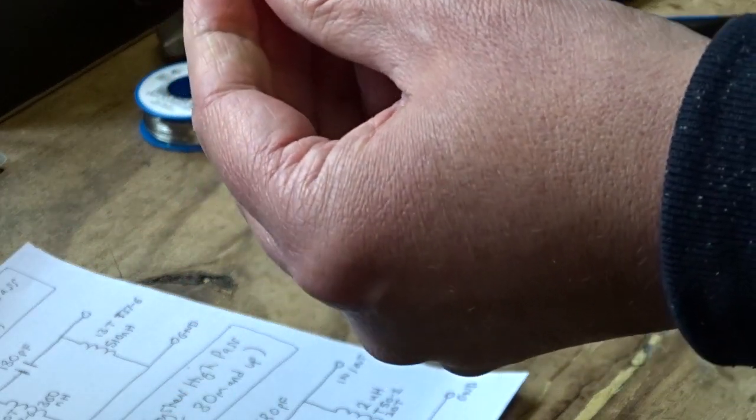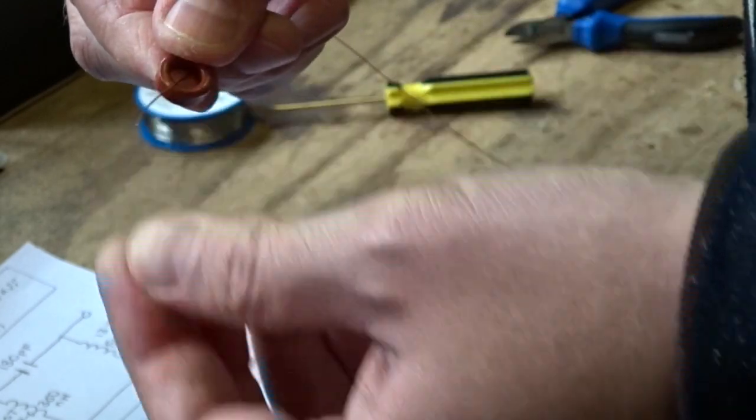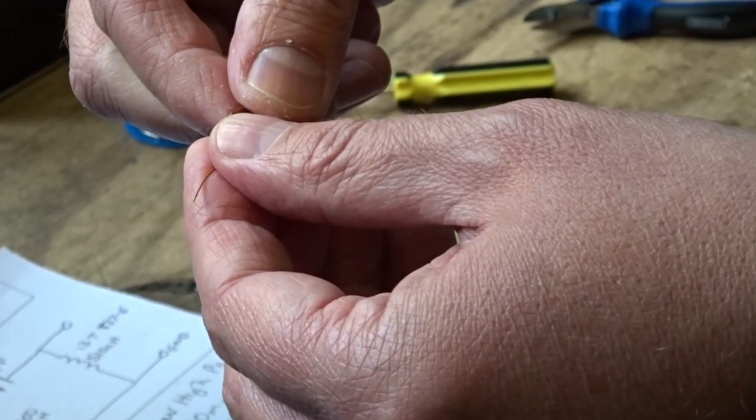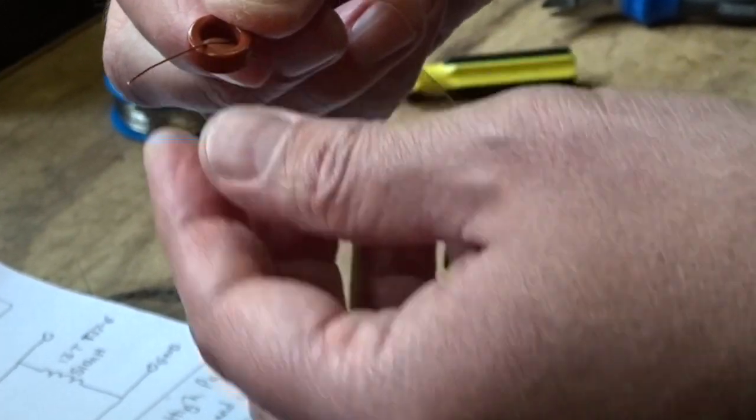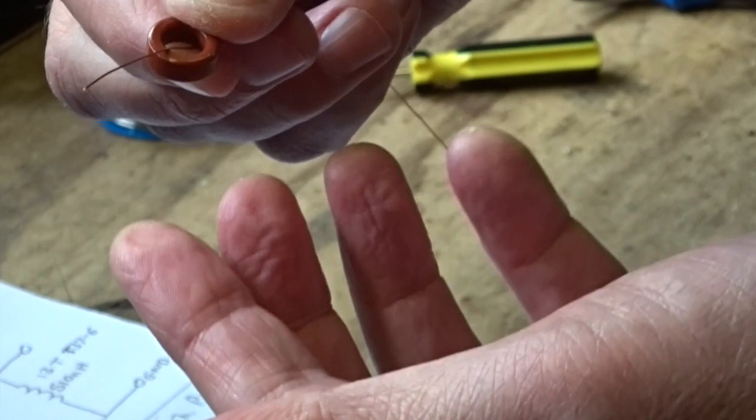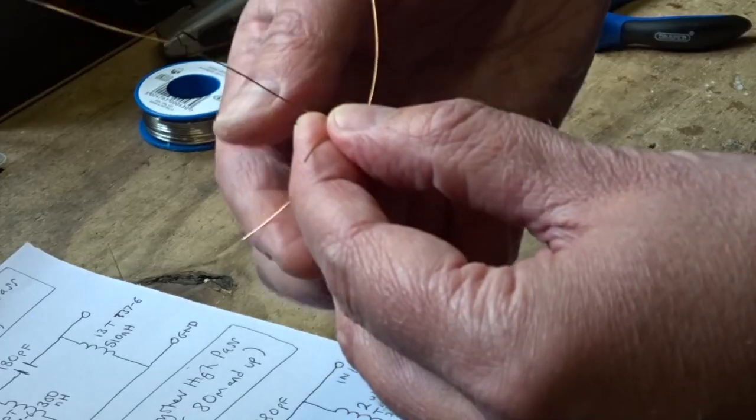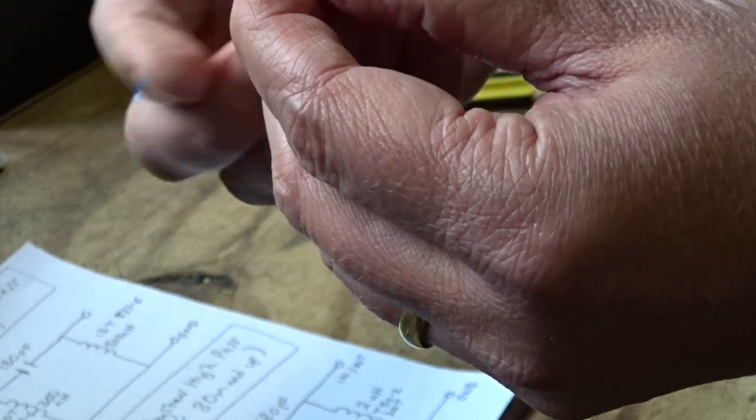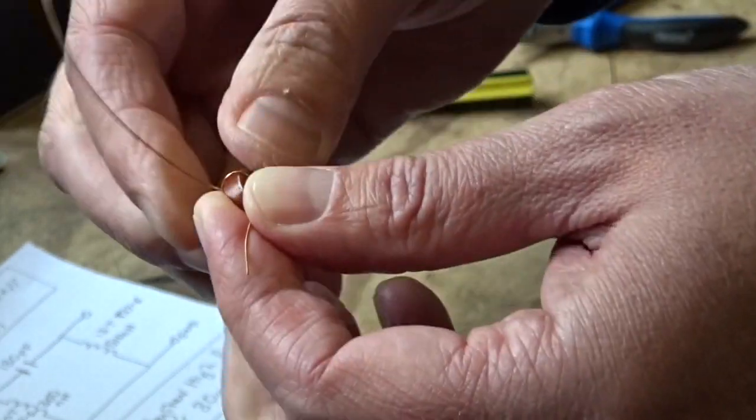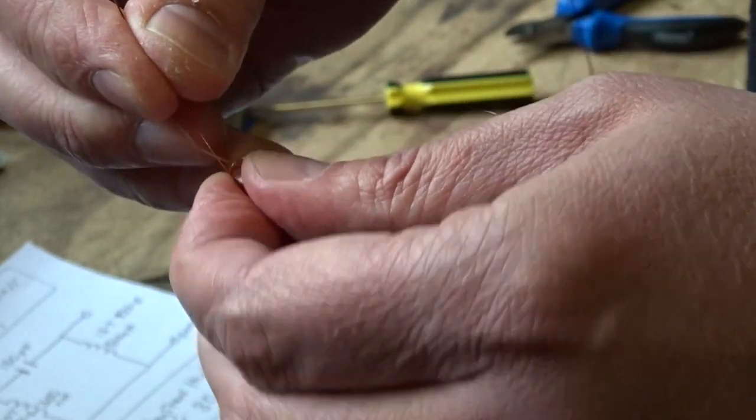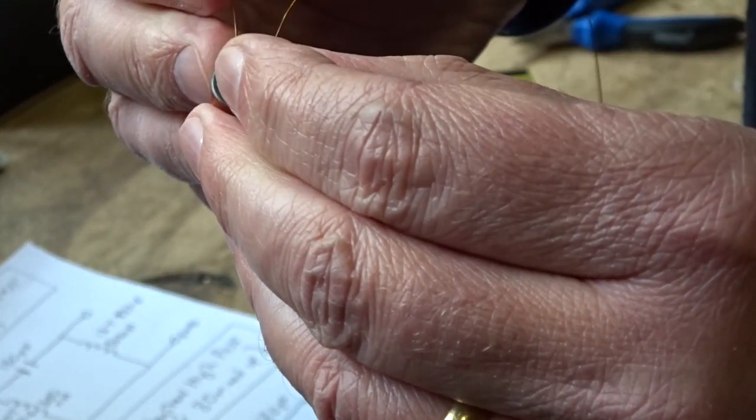Take your toroid in one hand and just poke the end through like that. Every time the wire passes through the core constitutes one turn. Once you've got a few turns on, they'll hang in there a bit better. That's one turn, so I'm going for the second one. Just loop it round, hold it, and make sure the wires don't cross underneath.